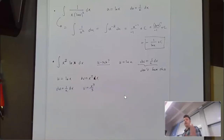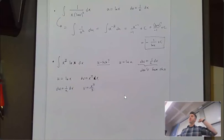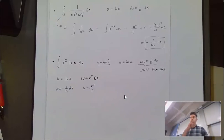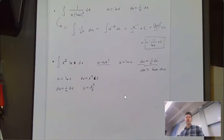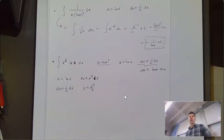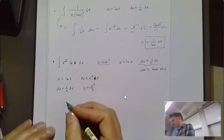Fun fact: if you're doing integration by parts and there's a logarithm, u is always going to be equal to the logarithm. Whenever you have a logarithm and you think integration by parts, that's always what u is going to be. There's a pattern we'll talk about for how to decide what u is.